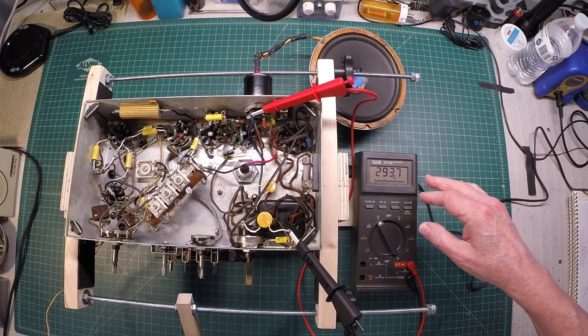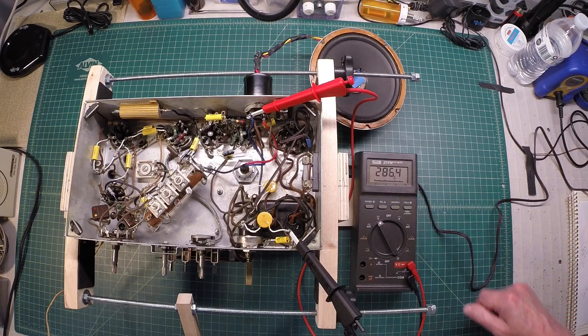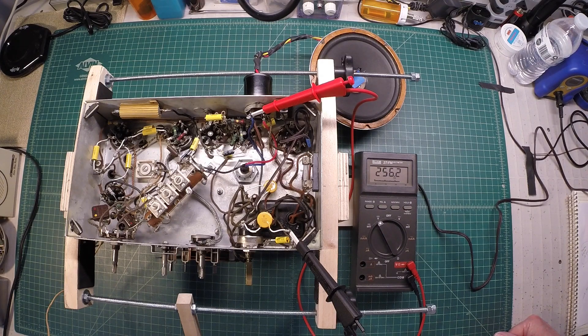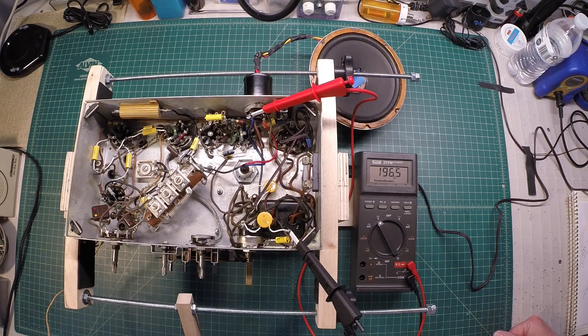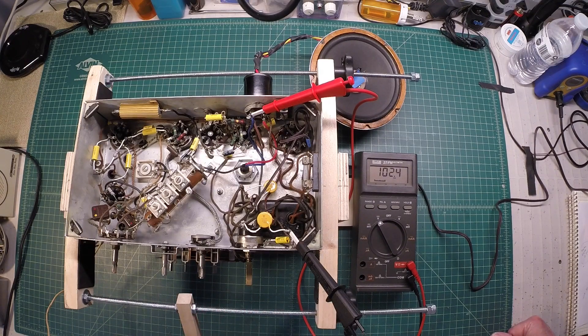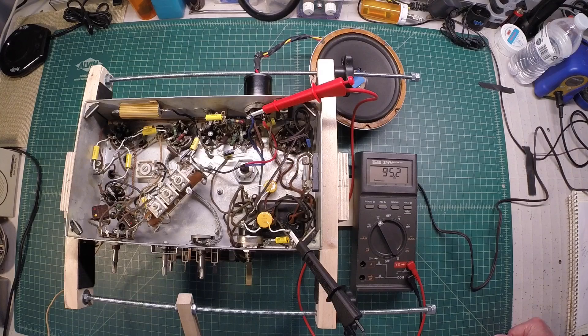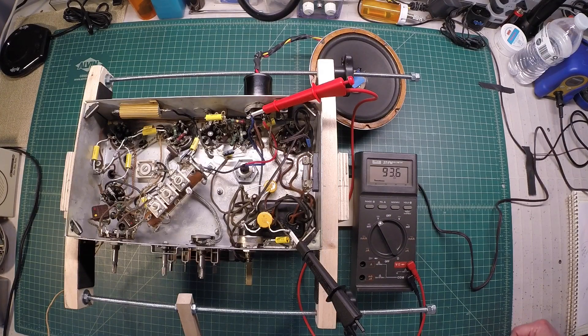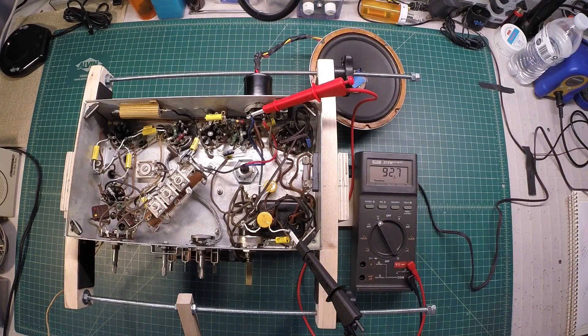Looking for the voltage here to settle in somewhere around 130 to 140 volts DC. You probably can't see it on the camera view, but the pilot lamp is starting to illuminate, and I'm about 80 volts AC here on the input side.